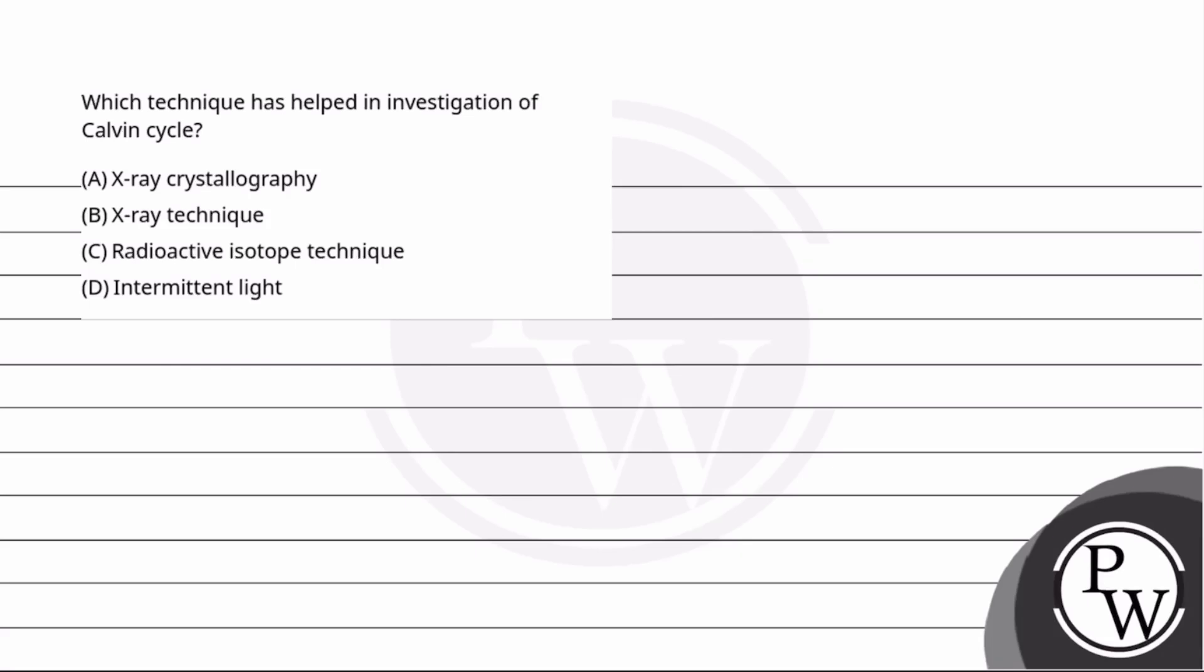Hello children, let's see the question: which technique has helped in investigation of Calvin cycle? The options are: A) X-ray crystallography, B) X-ray technique, C) radioactive isotope technique, D) intermittent light.